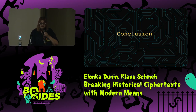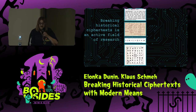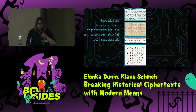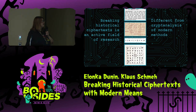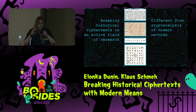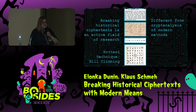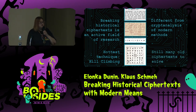Conclusion: breaking historical ciphertexts is an active field of research. It's different from cryptanalysis of modern methods — we don't have an infinite amount of ciphertext to work with to figure out the algorithm. The hottest technique right now is definitely hill climbing. And there are still many old ciphertexts left to solve.